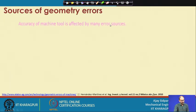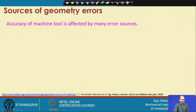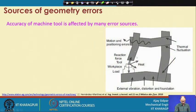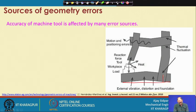Now, sources of geometry error. First let us take geometry error - what are the sources of error in x, y, z axis movement. The accuracy of the machine tool is affected by many sources. The guideway should be exactly a straight line, perpendicular to the other axes, and all three should be perpendicular to each other.